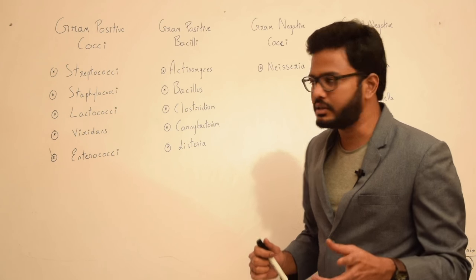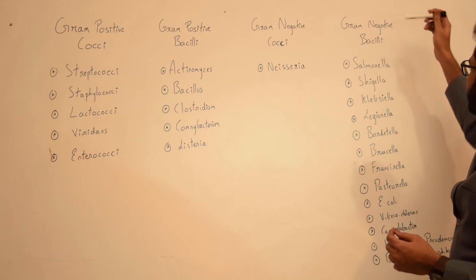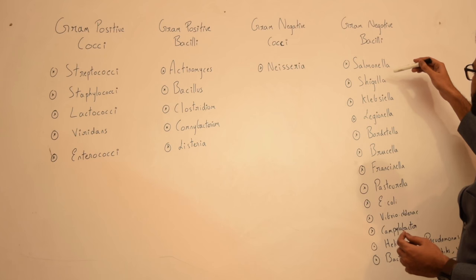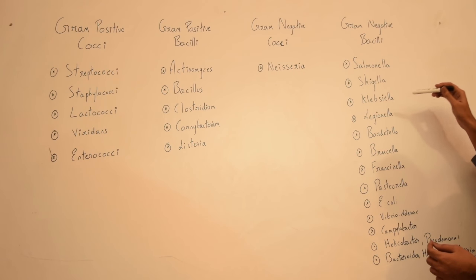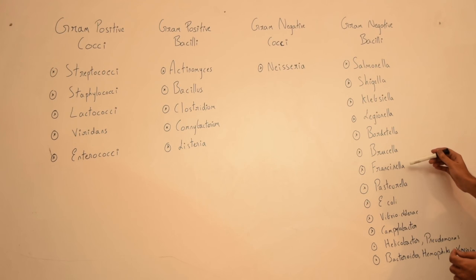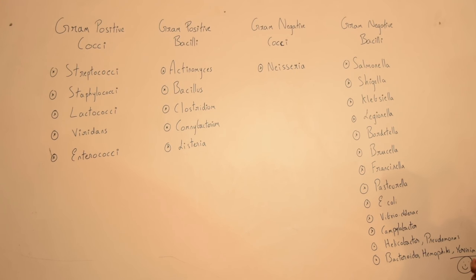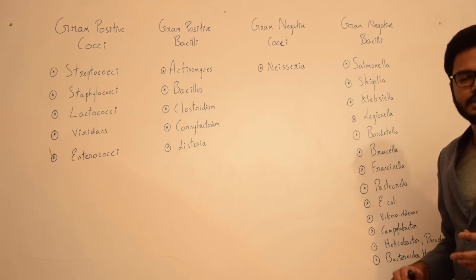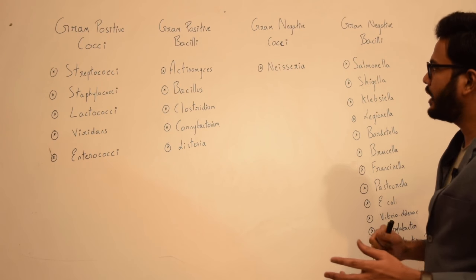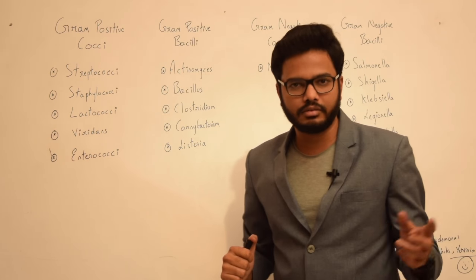Continuing gram positive bacilli: corynebacterium and listeria. Gram negative cocci: Neisseria. Gram negative bacilli: salmonella, shigella, klebsiella, legionella, bordetella, brucella, francisella, pasteurella, E. coli, vibrio, campylobacter, helicobacter, pseudomonas, bacteroides, haemophilus, and yersinia. I've tried to cover the major organisms involved in various infectious diseases.